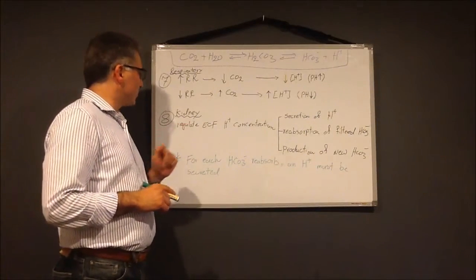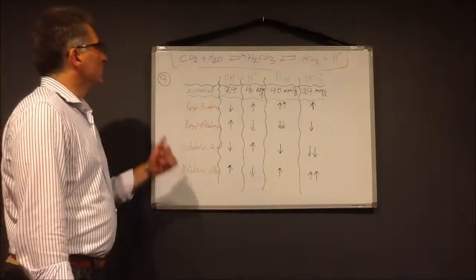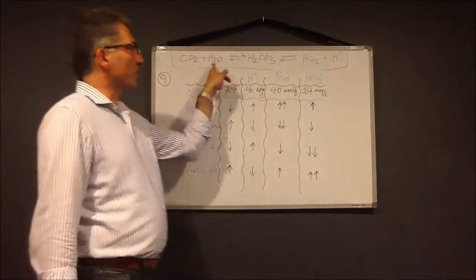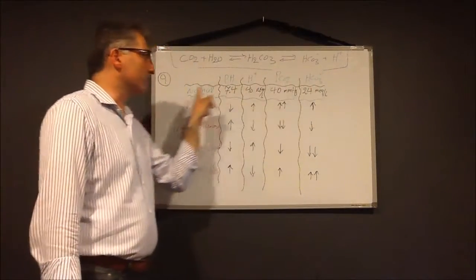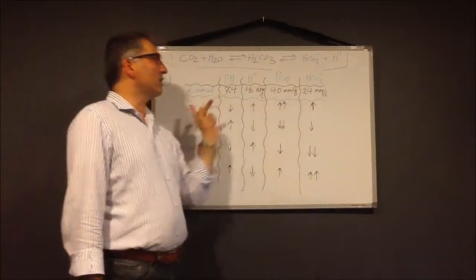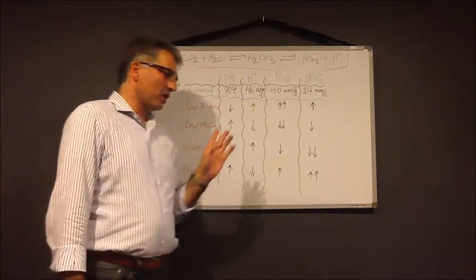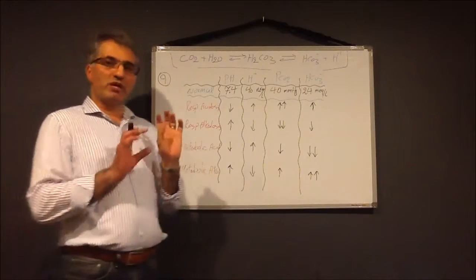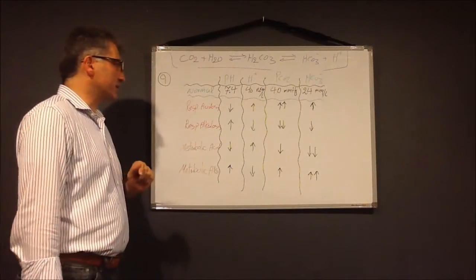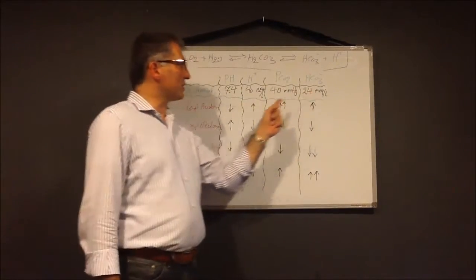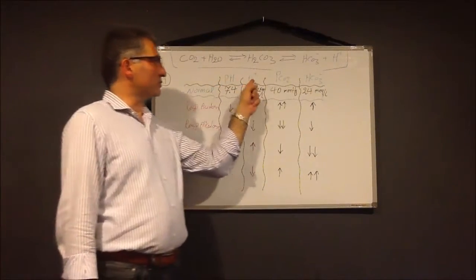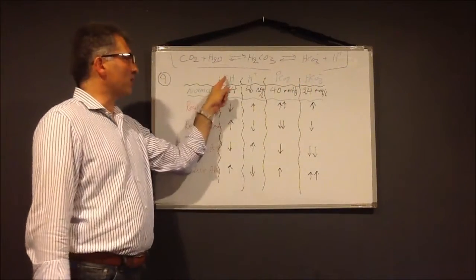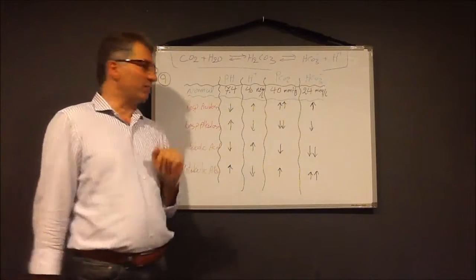Now I'll teach you how to read ABG very fast and easily, which is what you need in the clinic. The normal ranges you need to memorize are: pH 7.35–7.45, pCO2 35–45, and bicarbonate 22–26. Let me give you an example.